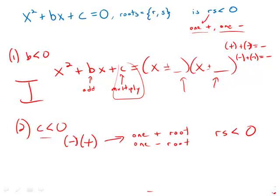So knowing that c is less than zero is equivalent to the statement that the product of the roots is less than zero. So that is 100% sufficient information.